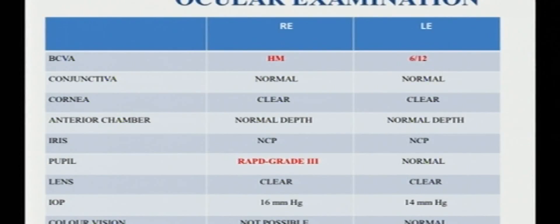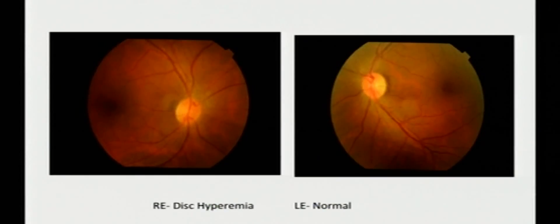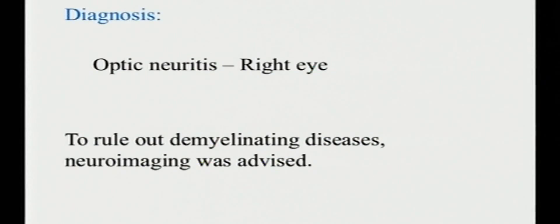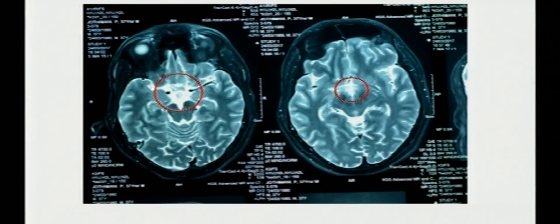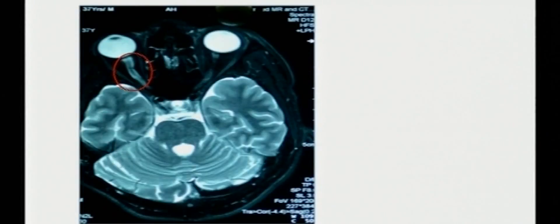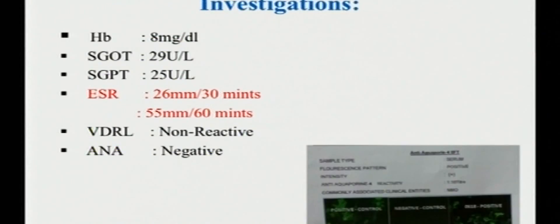On examination, his vision was hand movements in the right eye with a relative afferent pupillary defect. This was the disc of the patient which shows mild disc hyperemia in the right eye. The diagnosis is straightforward: Optic neuritis of the right eye. To rule out demyelinating causes as underlying pathology, neuroimaging was advised. The MRI of the patient shows the T2-weighted images showing hyperintensity over the optic chiasm and the optic tract. Here again, we can see the hyperintensity over the intraorbital part of the right side optic nerve. We went ahead with the investigations. The ESR is raised and interestingly, the aquaporin 4 antibody was positive.